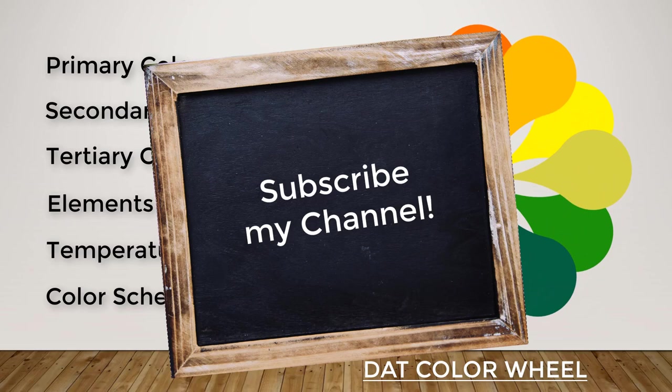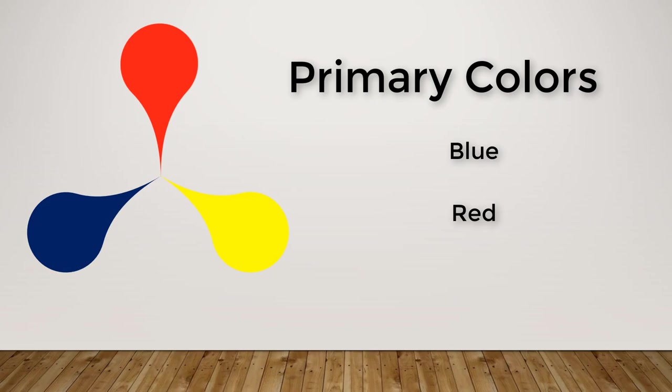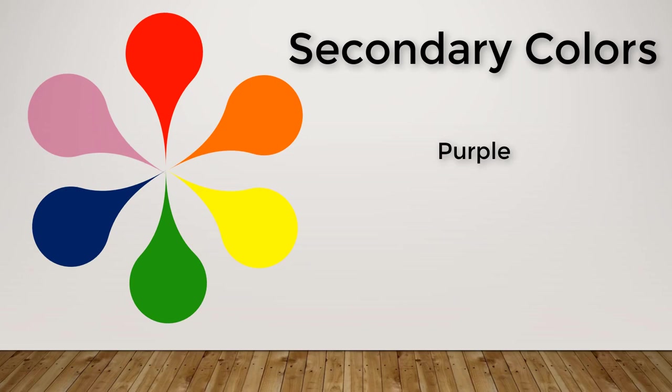There are 3 primary colors: blue, red, and yellow. Mixing 2 primary colors results in secondary colors. Red and blue gives purple, red and yellow gives orange, and blue and yellow gives green.